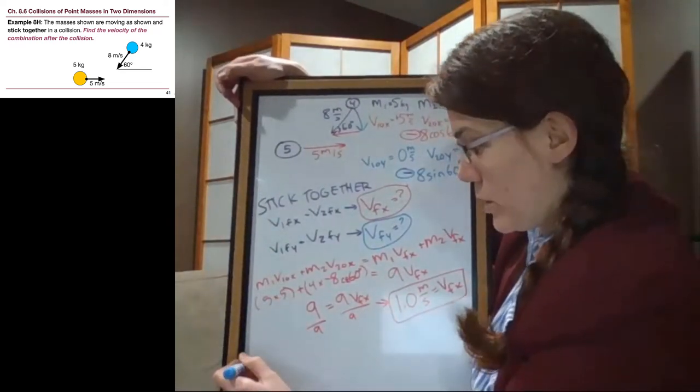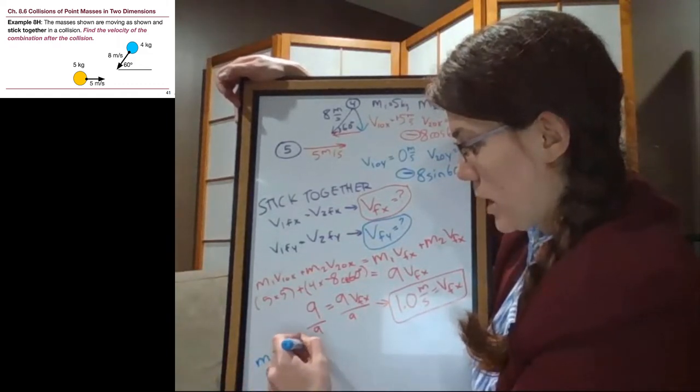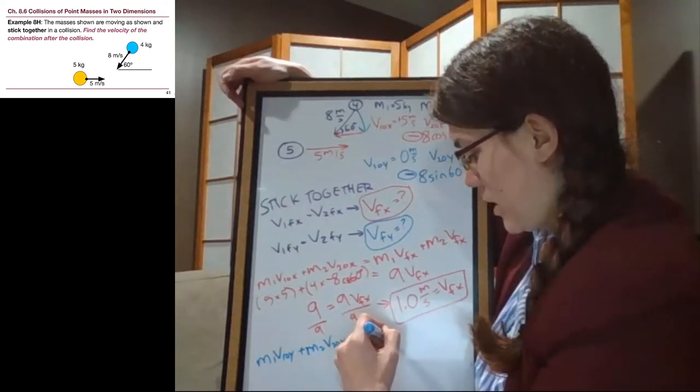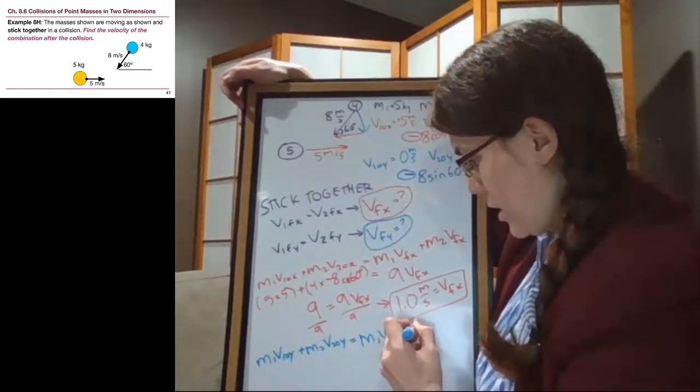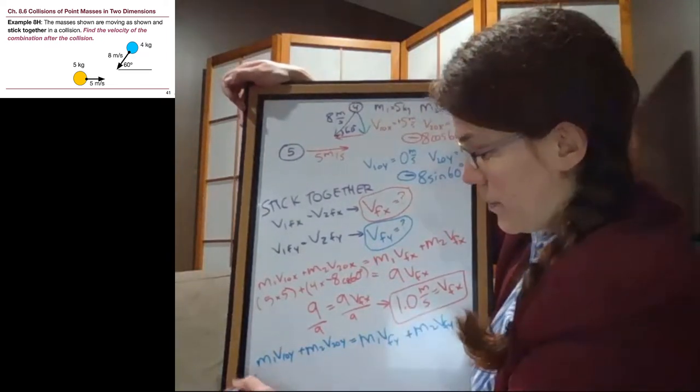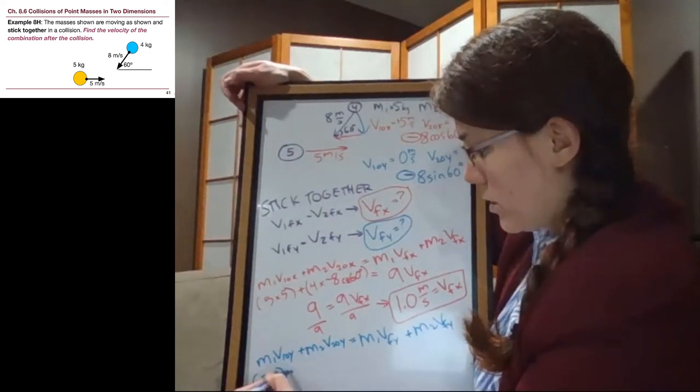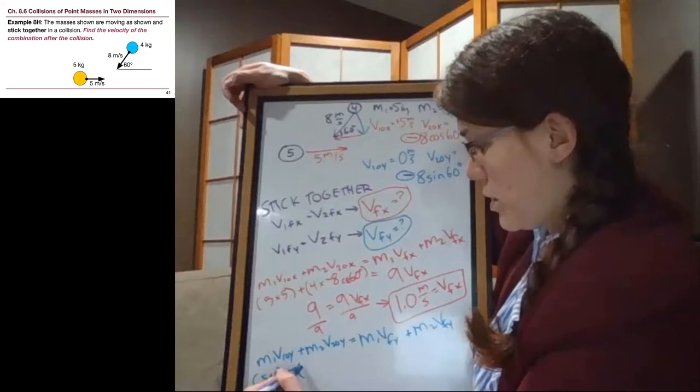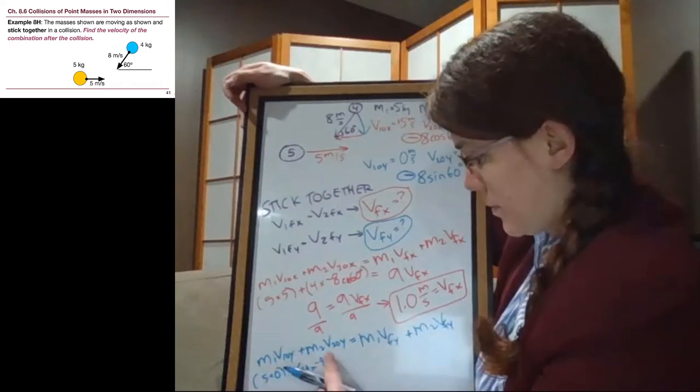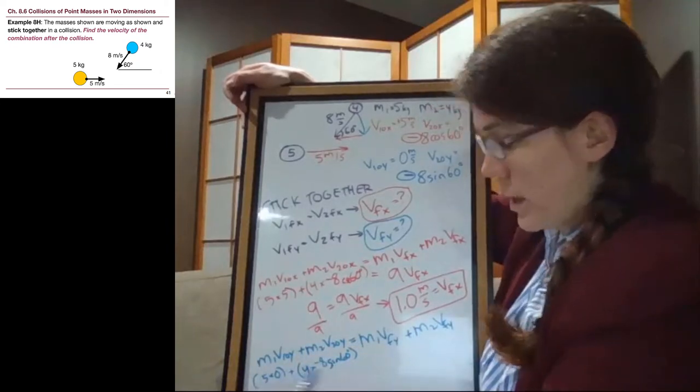Now we can turn to the y equation. So we've got m1 v1 initial y plus m2 v2 initial y equals m1 v final y, just an overall v final, plus m2 v final y. Okay, so we've got 5 times 0 plus 4 times negative 8 cosine... It's a good thing I've color-coded. I can easily see it. Sine 60 degrees. That's on the left.